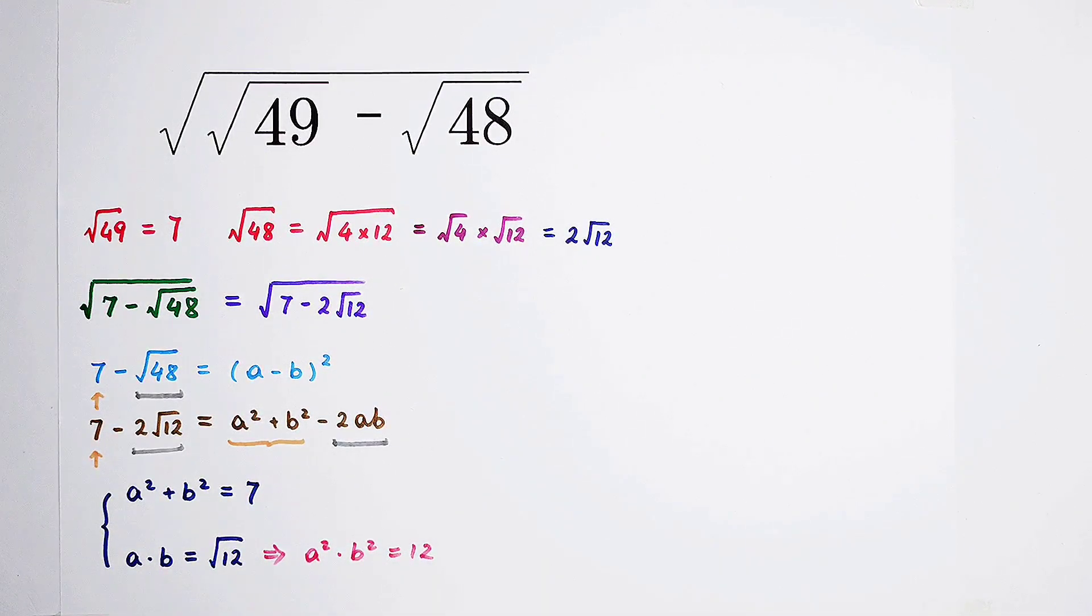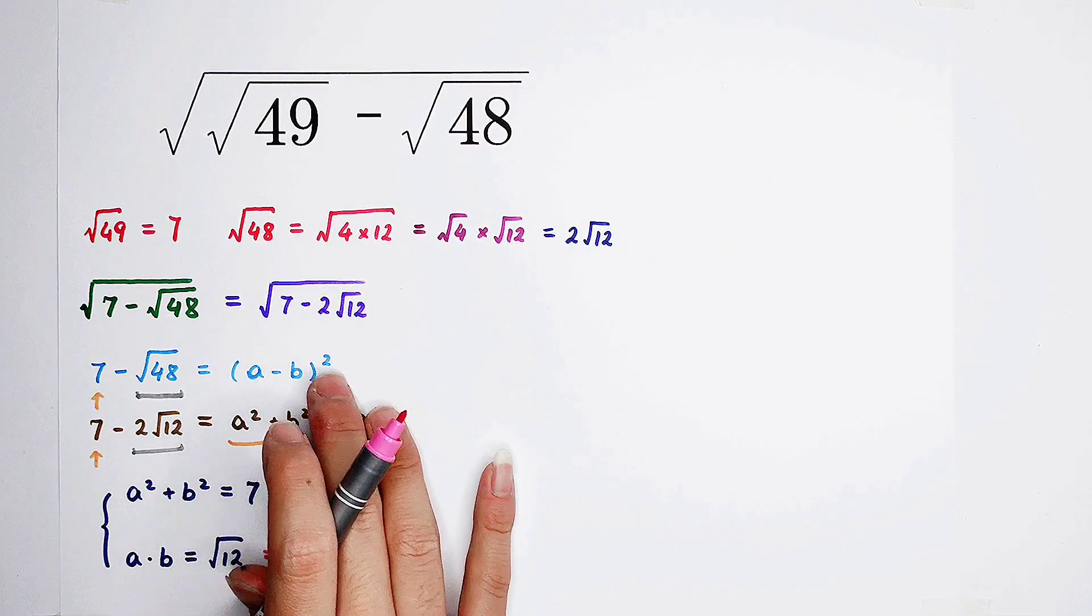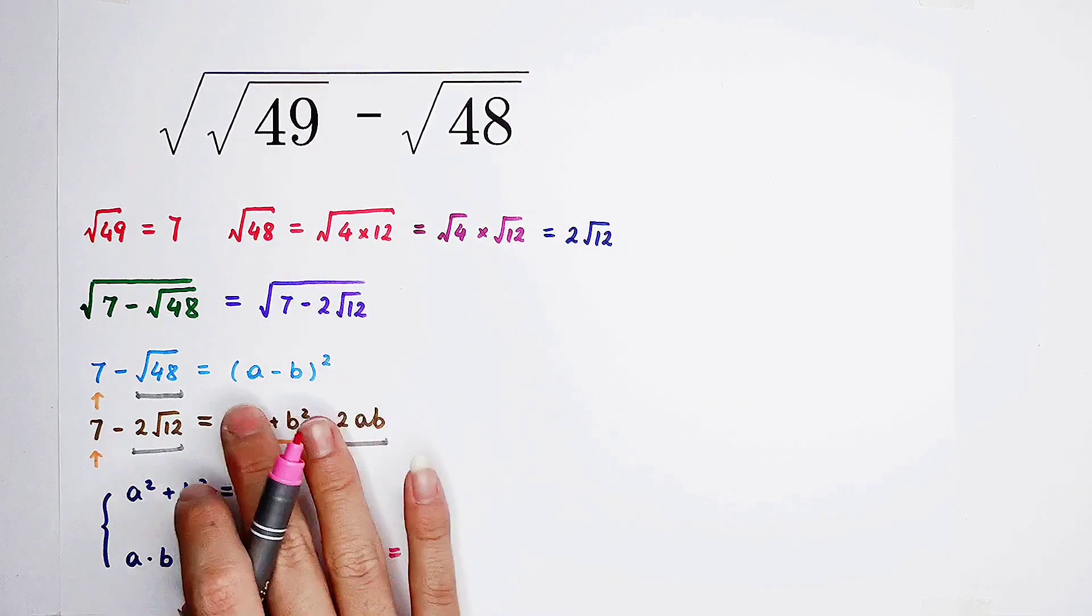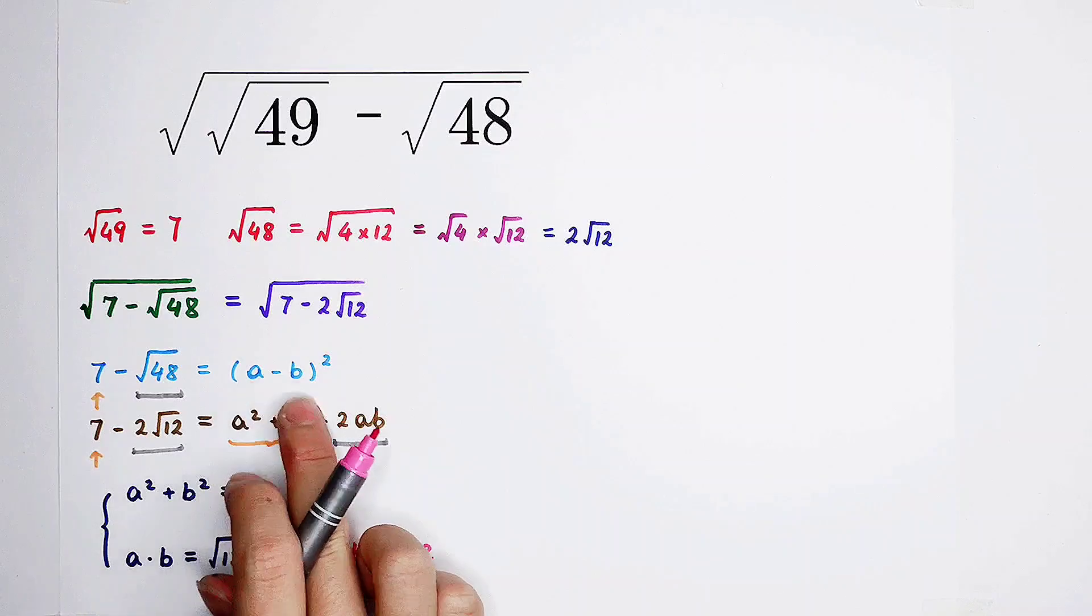So now, the addition of a² and b² is 7, and the product of them is 12. So we have to find a² and b². Because we know that a and b should be positive. That's enough. If they're both negative, that's also okay. It's gonna be b minus a. But (b minus a) squared has the same result as (a minus b) squared.